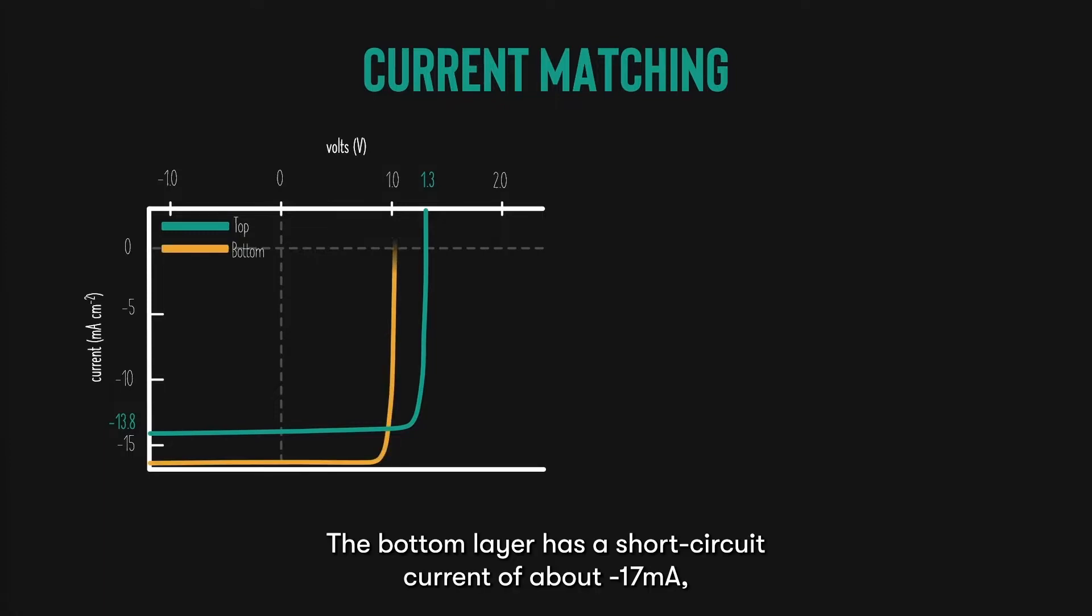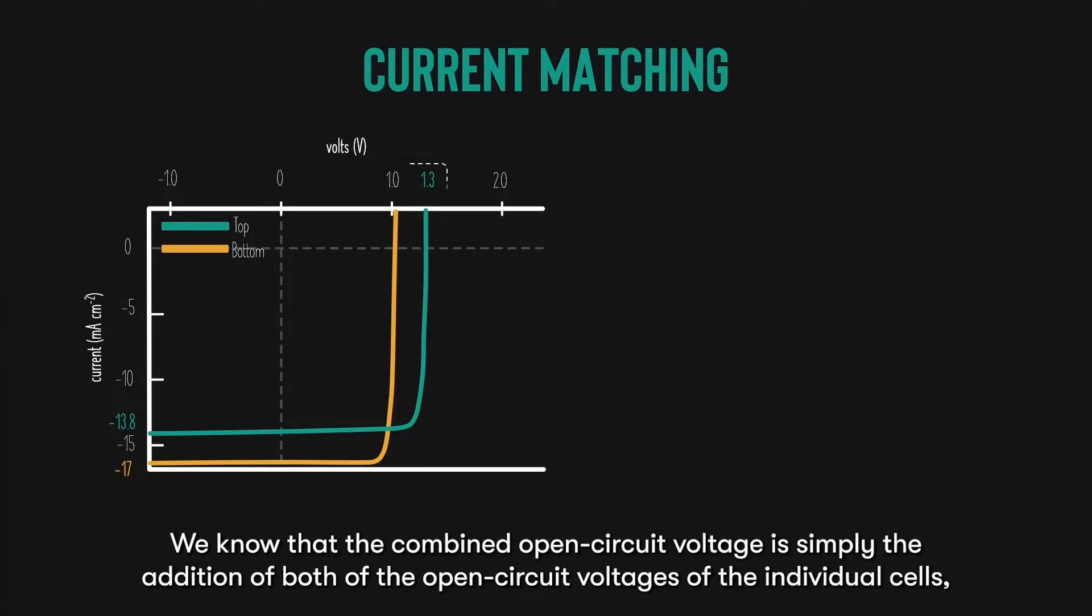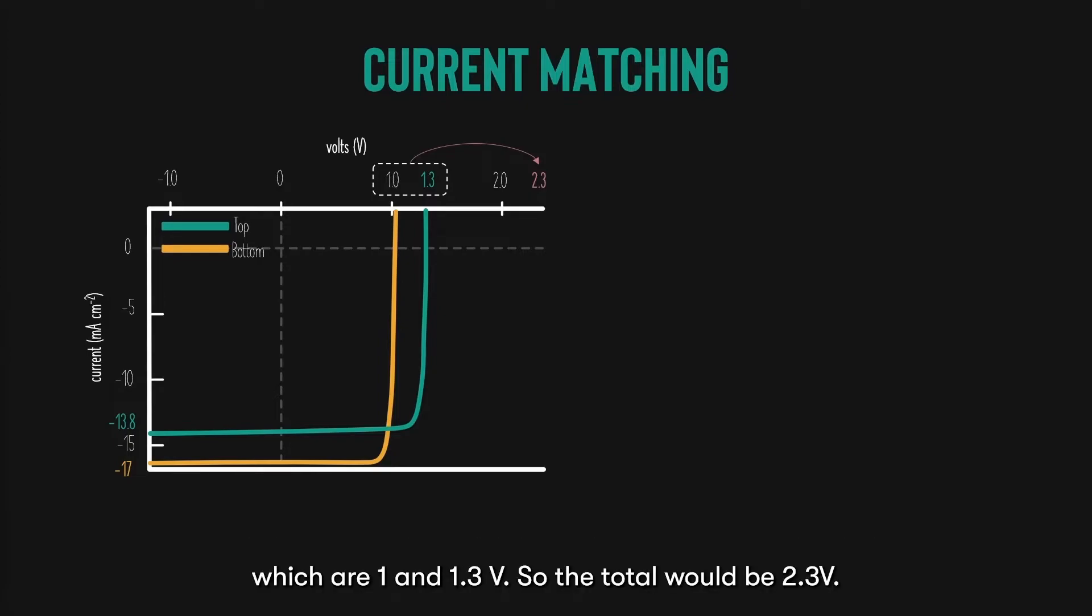The bottom layer has a short circuit current of about 17 milliamps and open circuit voltage of about 1 volt. The question is, how would the combined multi-junction cell IV curve be? We know that the combined open circuit voltage is simply the addition of both the open circuit voltages of the individual cells, which are 1 and 1.3 volts. So, the total would be 2.3 volts.